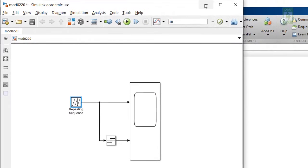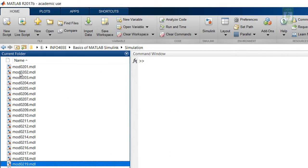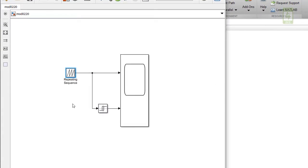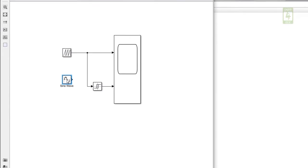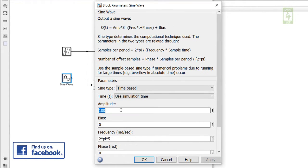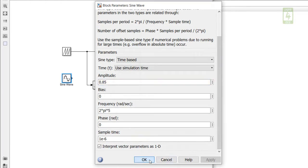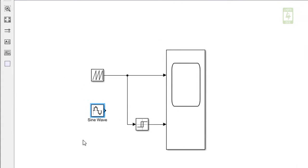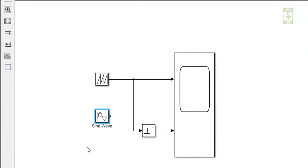Now open simulation we have created in second lecture. Now copy this envelope from here and paste it in our simulation file. Now open this block to change its parameter. We need to change only amplitude to 0.85 and close it. This block will generate our sinusoidal error of amplitude 0.85.